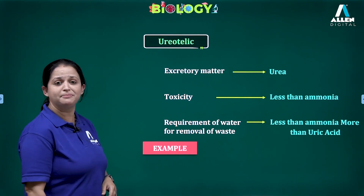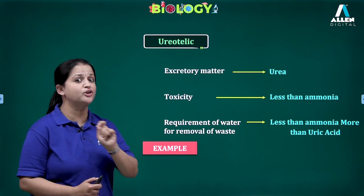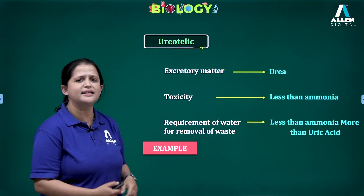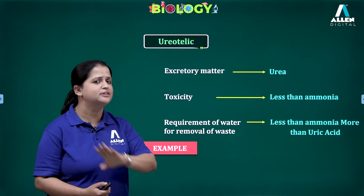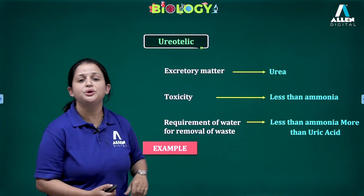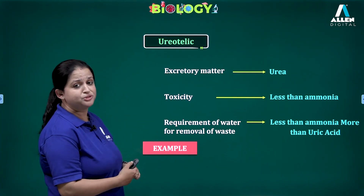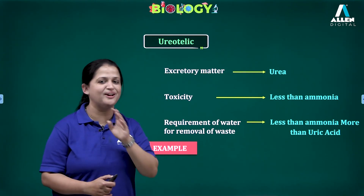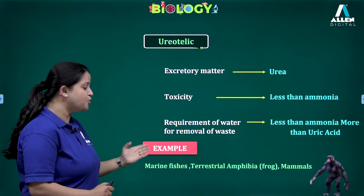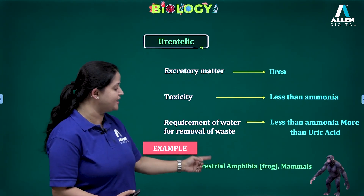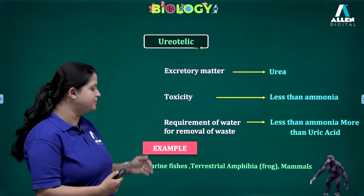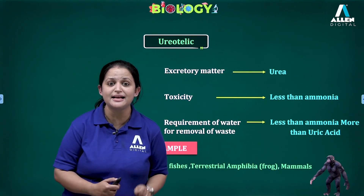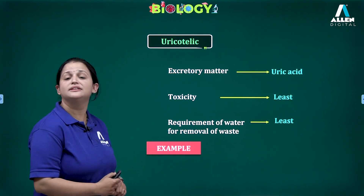The next type is ureotelic. In ureotelic animals, the excretory matter released is urea. The toxicity level of urea is less toxic compared to ammonia, and the requirement of water to remove urea is also less compared to ammonia. Examples for ureotelic animals are marine fishes, terrestrial amphibians — that is the frog — and mammals. For mammals, terrestrial amphibians, and marine fishes, it is easy to remove urea from the body because the water requirement is less than for ammonia.